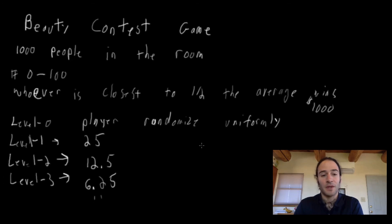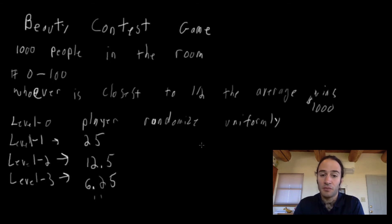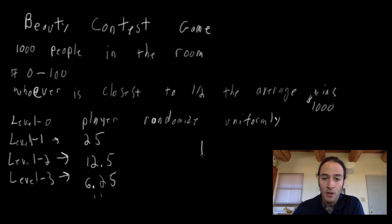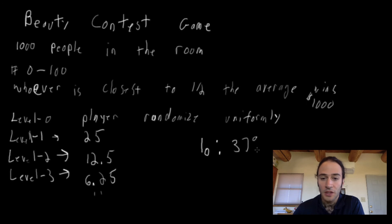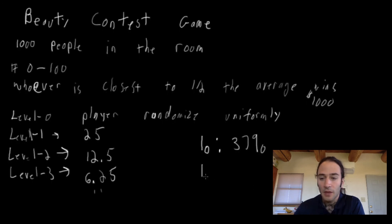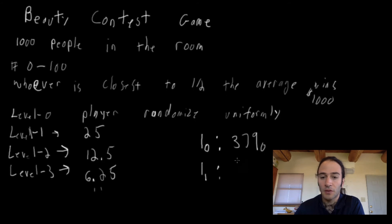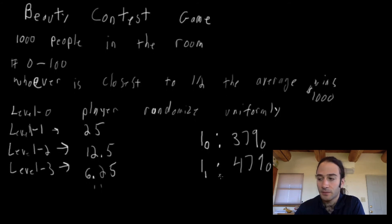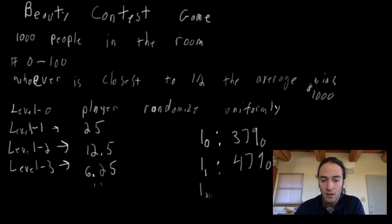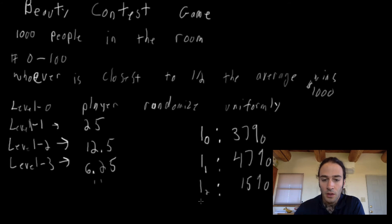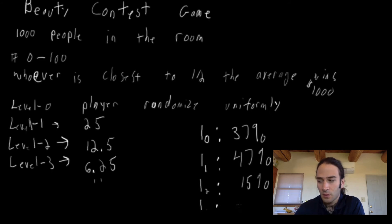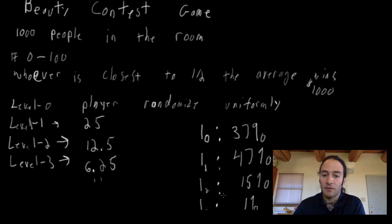One question you might be interested in is how do players actually play? A study — which I will provide in the references — was actually able to estimate the level of players. What it found was that level zero contained 37% of the players, level one contained 47% of the players, level two contained 15% of the players, and level three was a mere 1% of the players.